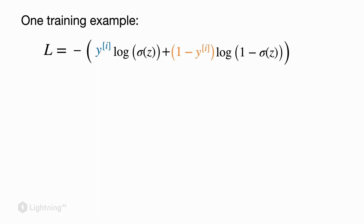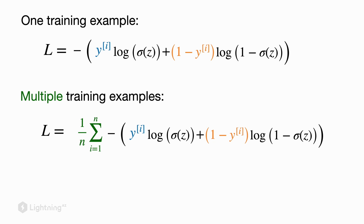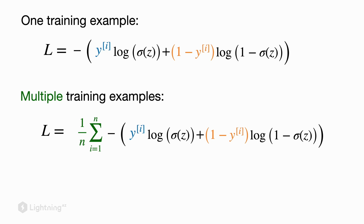This is the loss function for a single training example i. When working with multiple training examples, we add a summation term from i equals 1 to n, covering all n data points. We also introduce a 1 over n normalization term, which scales the loss so that when we work with different-sized datasets or batches, the loss values remain on a reasonable and comparable scale. This is the logistic regression loss in a nutshell. In the next video, we will introduce the logistic regression computation graph, putting all these concepts together.